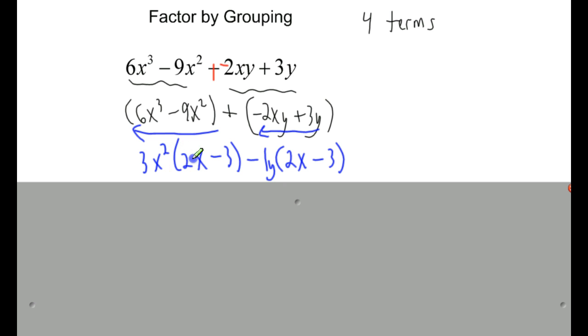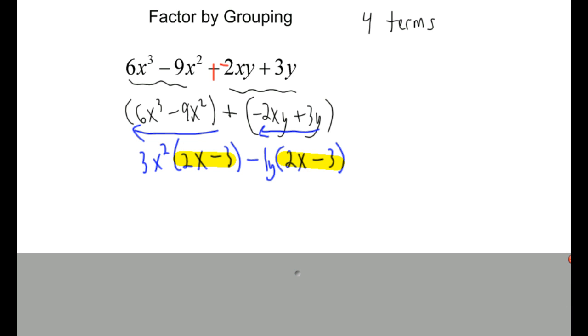And the magic that happens here, if you factor by grouping correctly, if it factors, this parenthesis will match this parenthesis. So what you do now, you look at this and you see there's a GCF there. I'm going to take out the 2x minus 3 and factor that out.